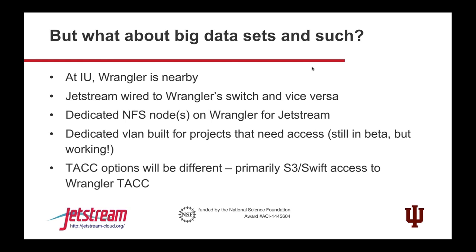One of the solutions available is kind of unique: Wrangler is another XSEDE resource, and at IU it is literally about four feet away from Jetstream — we have cross-wired into their switch. There are dedicated NFS nodes on Wrangler that serve to Jetstream. If you have a need, you open a ticket with us, we ask a few questions, and then build a private VLAN just for your project to access your space on Wrangler, giving you far more storage. The TAC side is working on an S3 or Swift solution for that.